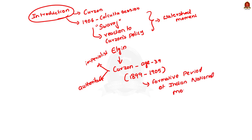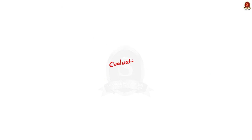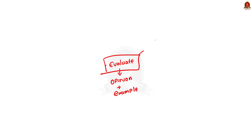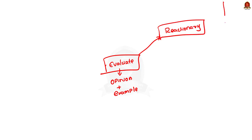Moving on to the body of the answer, there are two parts to this question. The first part is to evaluate the policies of Lord Curzon. Note the keyword 'evaluate' here — you have to give your opinion and support it with examples. We all know that Curzon's policies were reactionary, so we have to mention some policies and state how they were reactionary. The most common mistake people make is listing out his policies instead of evaluating them. Don't make that mistake — if you just list out his policies, you are not answering the question.